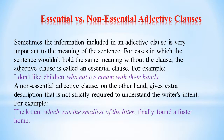Essential vs. non-essential clauses: sometimes the information in an adjective clause is very important to the meaning of the sentence. When the sentence wouldn't hold the same meaning without the clause, it is called an essential clause. For example, 'I don't like children who eat ice cream with their hands' — here the adjective clause gives essential information. If you removed the clause, the sentence would simply say 'I don't like children,' which is very different from not liking messy children who eat with their hands. An essential adjective clause does not require any additional punctuation.